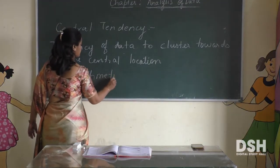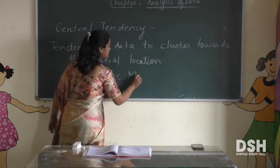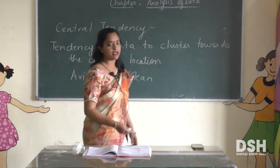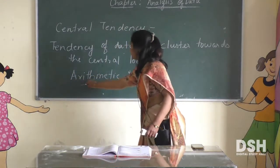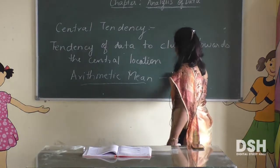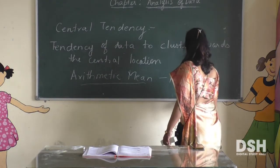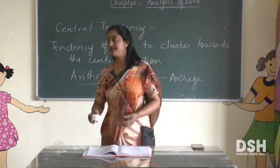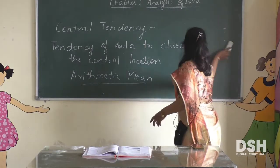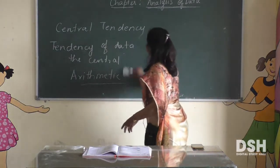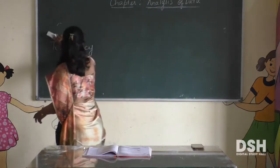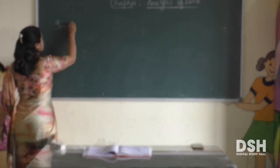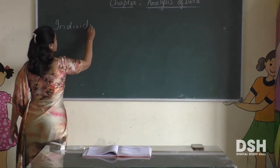The first and very important measure of central tendency is arithmetic mean. Arithmetic mean — you can say averages — they are also known as averages. Accordingly, we will see what formulas are there for each type of series. So let us start with the first: individual series.